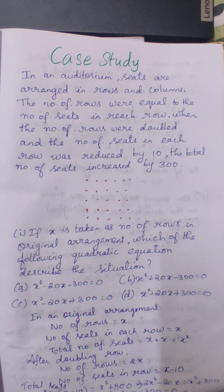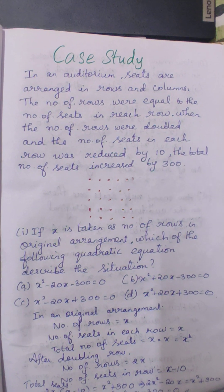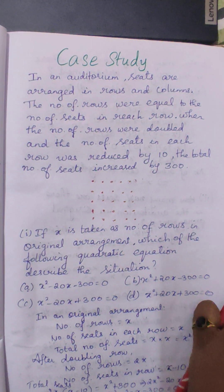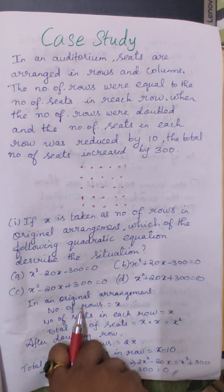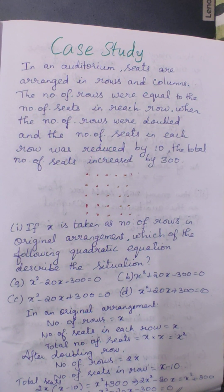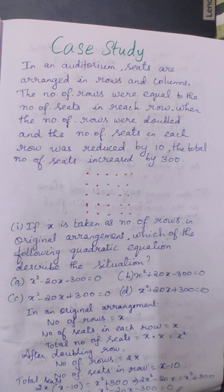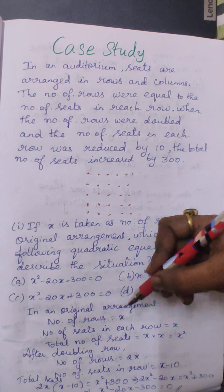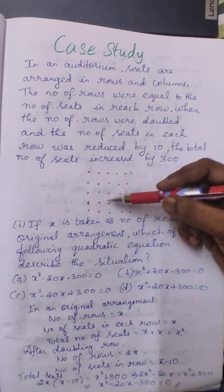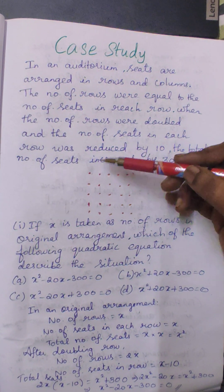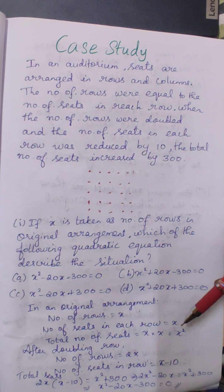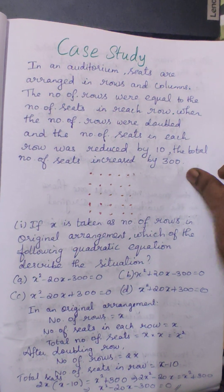In the first question, if x is taken as the number of rows in the original arrangement, which quadratic equation will describe the situation? To derive the equation, we take the number of rows as x. Since the number of seats in each row is the same as the number of rows, both are x. So the total number of seats will be x into x, which is x squared.